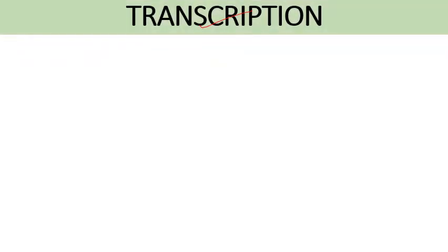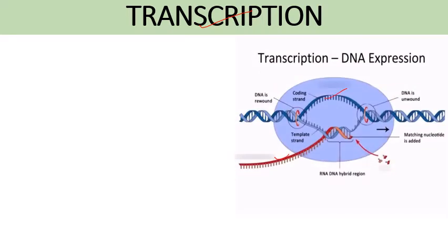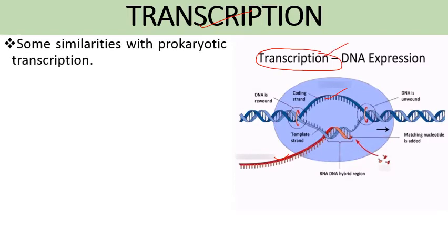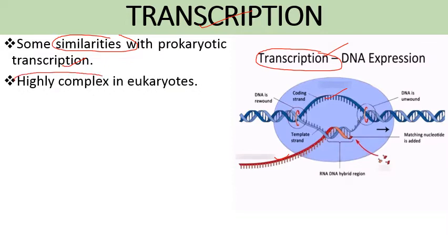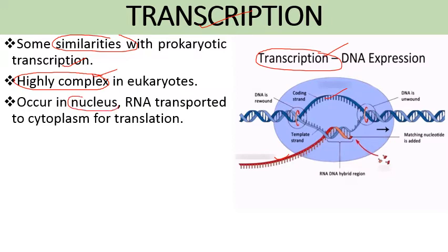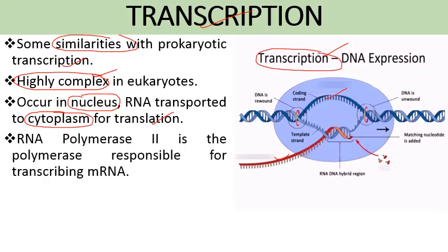Transcription is the process of formation of mRNA from DNA, and it is the first step of gene expression. There are some similarities with prokaryotic transcription, but in eukaryotes the process is highly complex. It occurs inside the nucleus where RNA is synthesized, and then this RNA is transported to the cytoplasm for translation. The formation of mRNA is done with the help of the enzyme RNA polymerase 2.